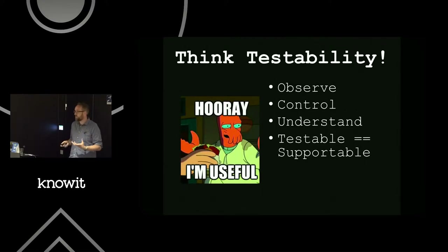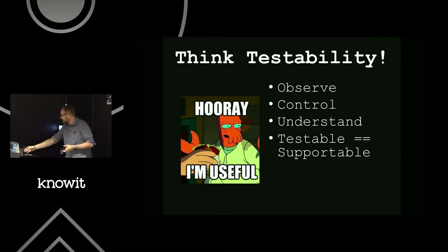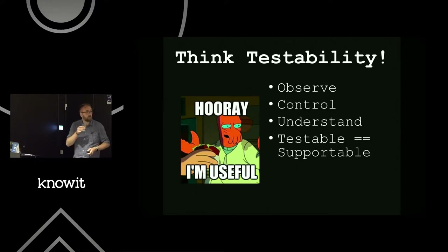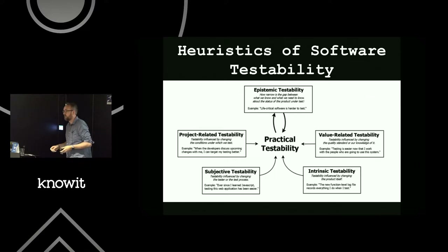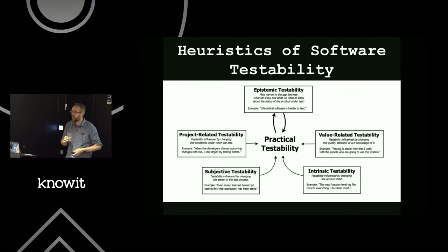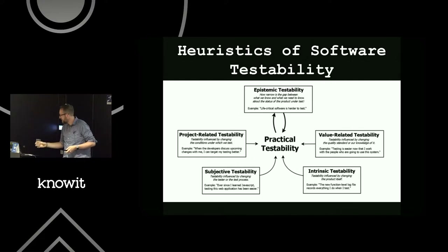For me, if it's testable, it's supportable. If it's testable while you're working in a development team, then as soon as it goes into the operations realm, it's going to be much more supportable — much more observable, controllable, and understandable. And useful to all, not just DevOps. It wouldn't be a testing presentation without a bit of James Bach in there. This is kind of the base model for testability that most testers might know about or be able to reason around, and it's very holistic.